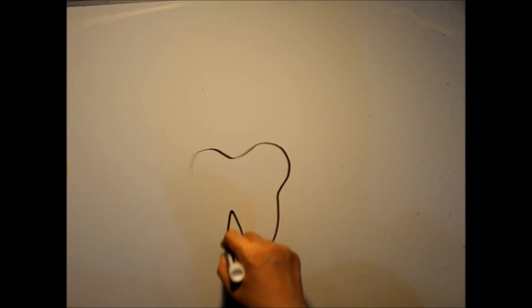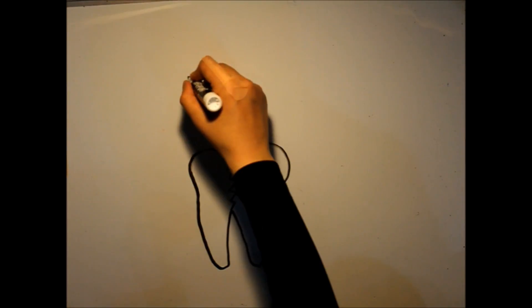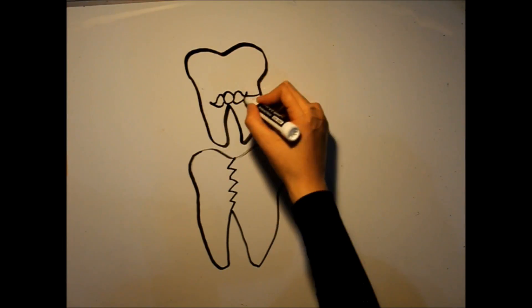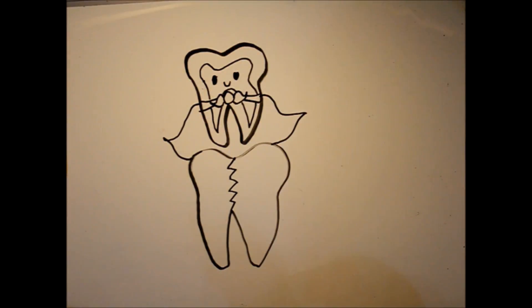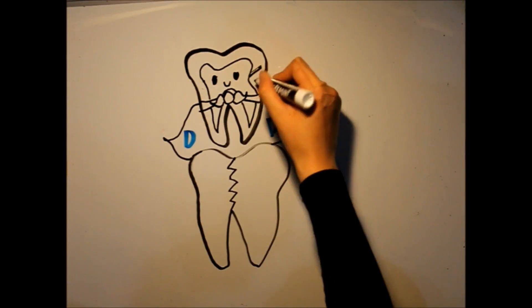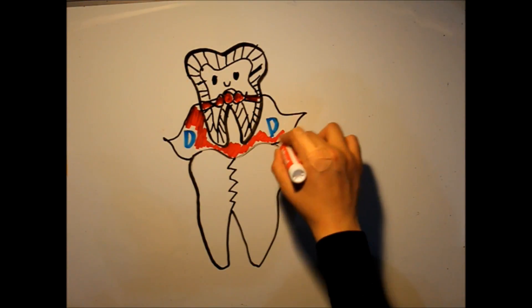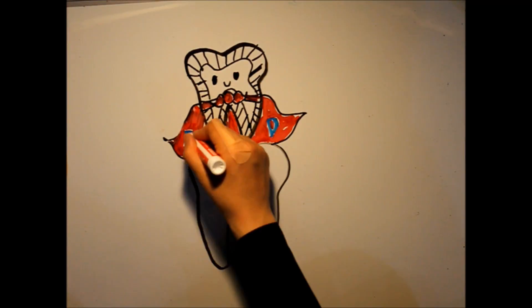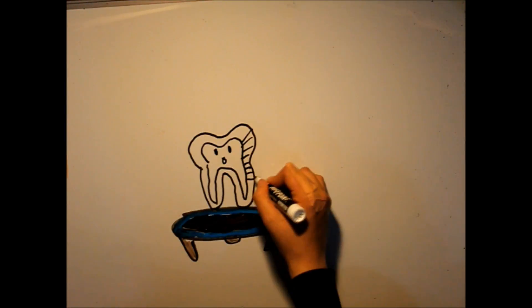Ever wondered why your teeth don't shatter under masticational forces although your enamel, the outermost layer, is brittle? The answer lies underneath the enamel where we have the dentin that forms the bulk of the tooth. Dentin forms a flexible layer under the enamel allowing it to withstand those forces.